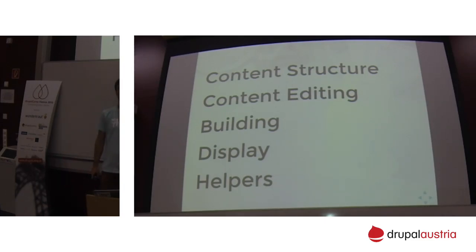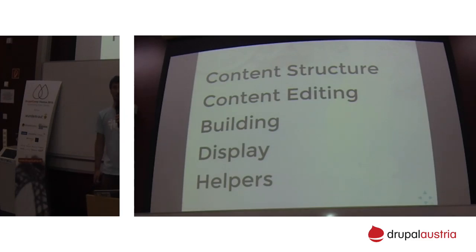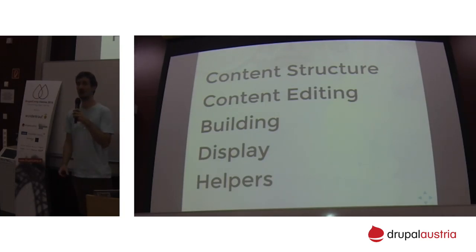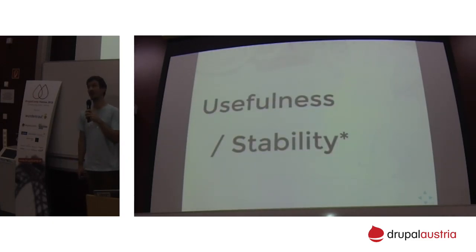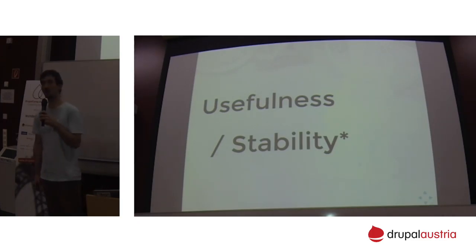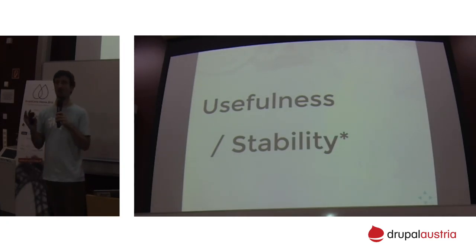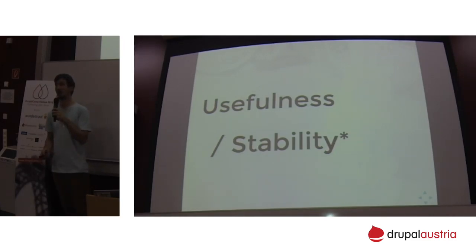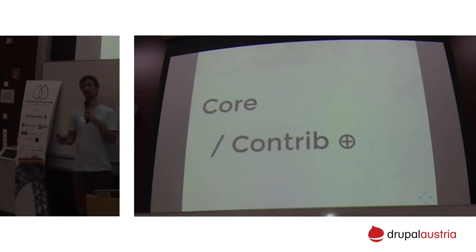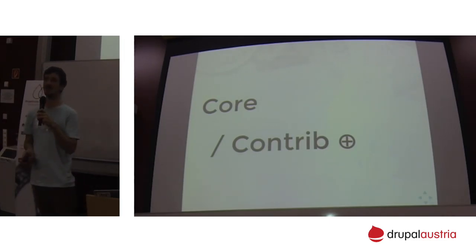We'll talk about how we can realize content structures, what's up with content editing, a building part, the display, and the helpers. These are categories I came up with to fit all the different site building modules that are out there. As there are more than a hundred, I'm applying a methodology to prioritize which modules are relevant to us as an agency and to me as a site builder - which I consider useful, how stable they are, and which are core versus contrib modules, annotated with a small plus sign.